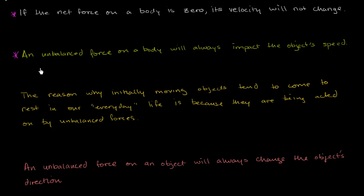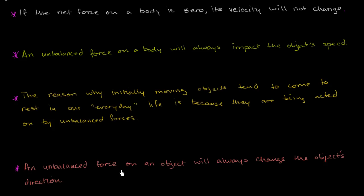Statement number two: an unbalanced force on a body will always impact the object's speed. Statement number three: the reason why initially moving objects tend to come to rest in our everyday life is because they are being acted on by unbalanced forces. And statement four: an unbalanced force on an object will always change the object's direction.